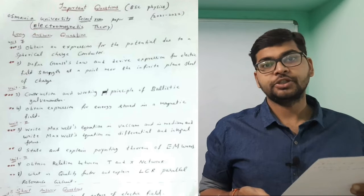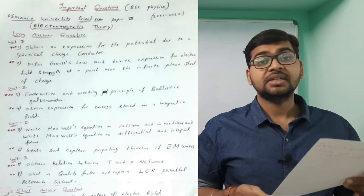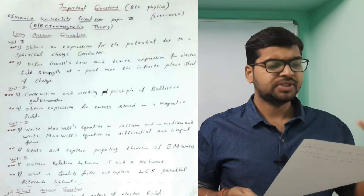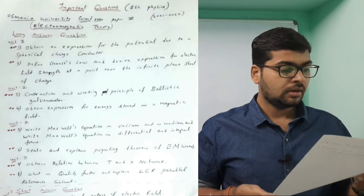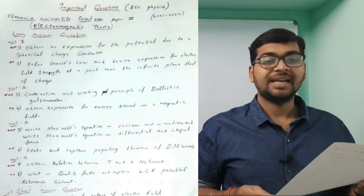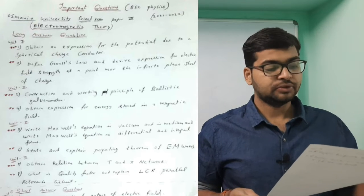The first one, potential due to spherical charge distribution, is very much important. Maximum chances are there to come in examination. Next, second unit - construction and working principle of ballistic galvanometer is very important.